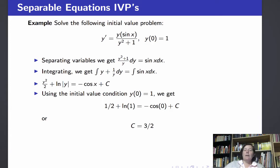Now we use our initial value condition to find the value of c. Plugging in x equals 0 and y equals 1, we get 1 half plus the natural log of the absolute value of 1 equals minus cosine of 0 plus c.